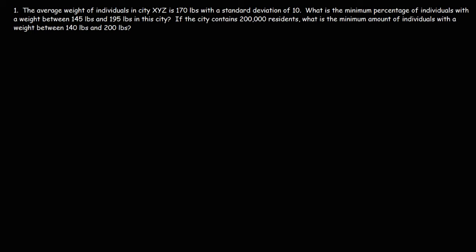In this video, we're going to talk about Chebyshev's theorem and how we can apply it to solve a problem like the one we have on the board. Chebyshev's theorem gives you the minimum proportion of data that is within k standard deviations of the mean. To calculate that proportion, you use this formula: 1 minus 1 over k squared, and k has to be greater than 1.